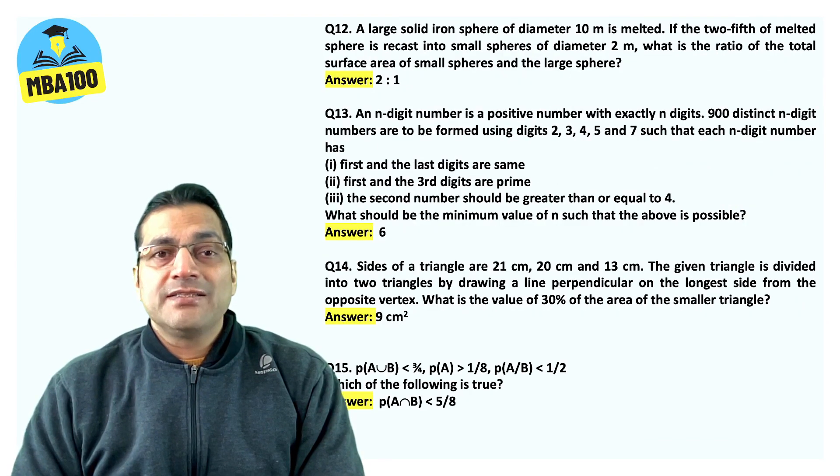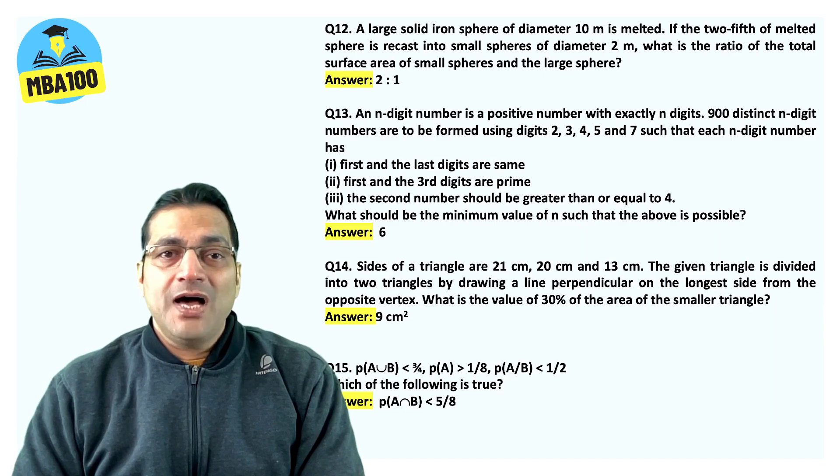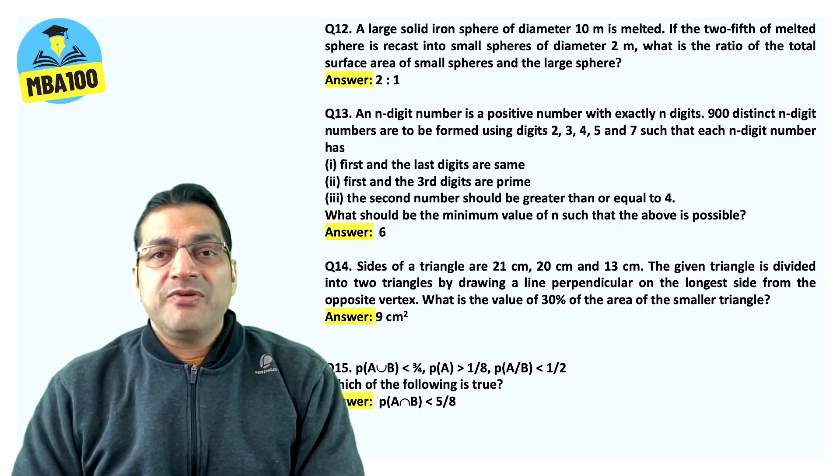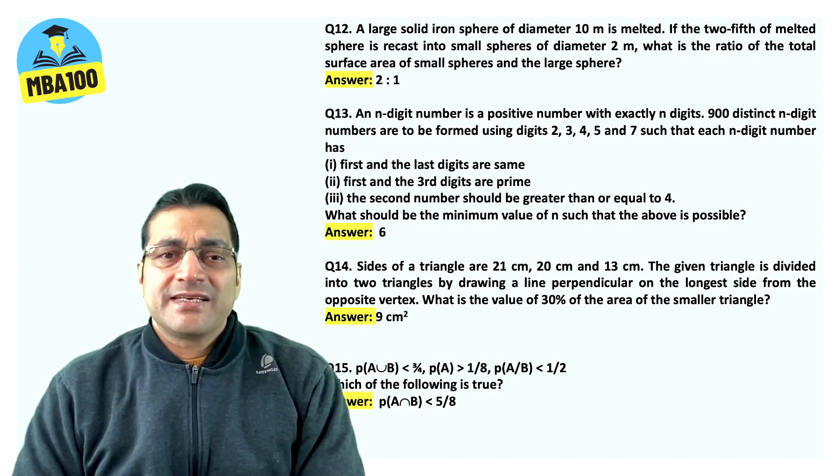A large solid iron sphere. Answer is 2 is to 1. An n-digit number is a positive number with exactly n digits. Slightly innovative. Answer is six.